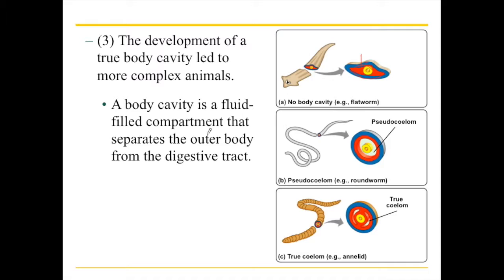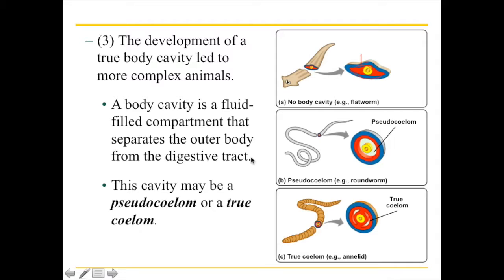If you start looking at a body cavity, there is a fluid-filled compartment — fluid instead of solid. That can be an advantage because it gives you a little flexibility, and it separates the outer body from the digestive tract — that's what I mean by layers. You start to see distinct layers. If you have that cavity, it comes in basically two types. You have a pseudocoelum, which means it is a body cavity but still a little rudimentary. It's a little like a garden hose — you have an outer layer that's pretty strong, an inner layer of muscle tissue, and the gut in the middle is kind of floating there, not held together properly. This is the kind of thing you'll find in roundworms, nematode worms.